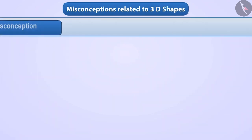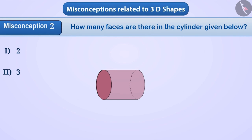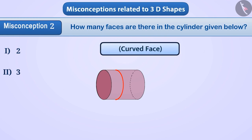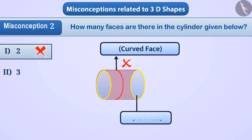Misconception 2: How many faces are there in the cylinder shown below? Some students do not count the curved face when counting faces. They think that faces are always flat and cannot be curved, so they think there are only two faces in a cylinder. With this understanding, option 1 is chosen, which is incorrect.